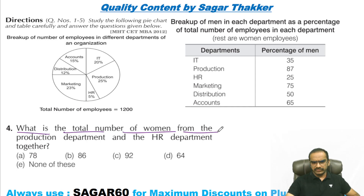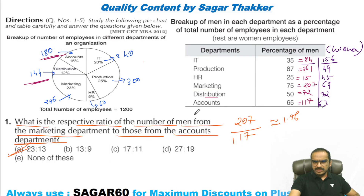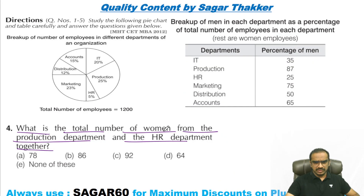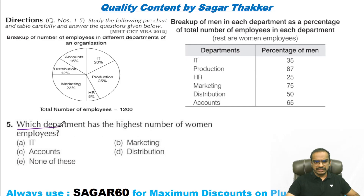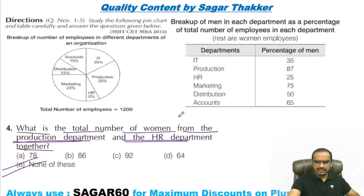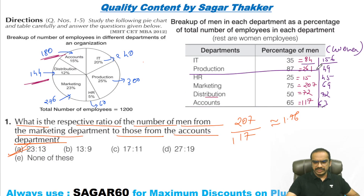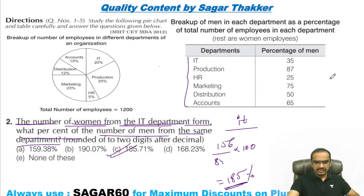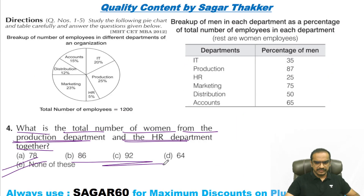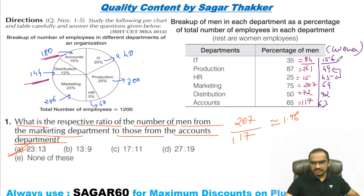What is the total number of women from the production department and HR department together? Production is 261, HR is 15 — so 276. But wait, I was looking at men statistics. Production and HR women: 40 and 40 is 80, plus 14 — that is 94. The highest number of women is in IT.